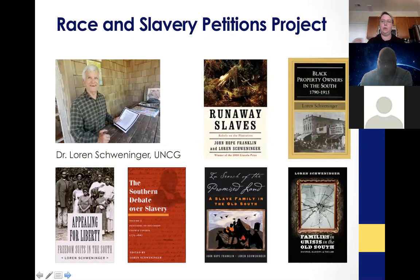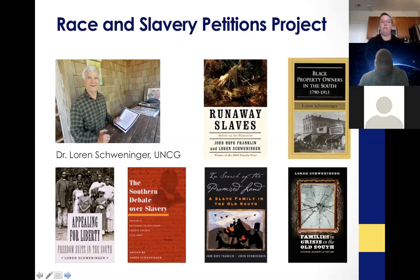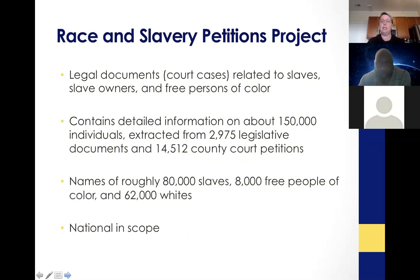The Race and Slavery Petitions Project grew out of research by Dr. Lauren Schwenninger, a retired professor of history at UNCG. He had amassed shelves and shelves of paper copies of resources related to slavery in North Carolina, and through conversations with the digital projects coordinator at UNCG, they decided it should all go online. That first element covers legal documents and court cases related to enslaved people, slaveholders, and free persons of color. It contains detailed information on 150,000 individuals from close to 3,000 legislative documents and 14,500 county court petitions — including names of roughly 80,000 enslaved people, 8,000 free people of color, and 62,000 white people.